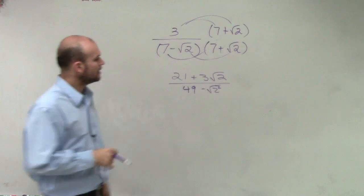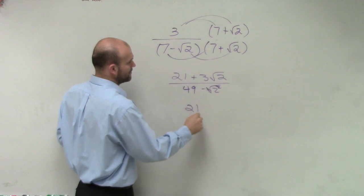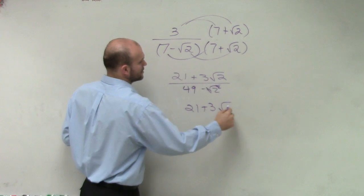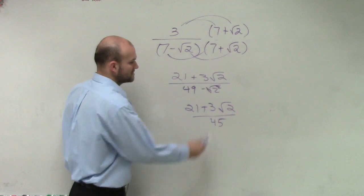So therefore this just becomes 2. So therefore I'm at 21 plus 3 square root of 2 divided by 45. Oh, 47, you're right.